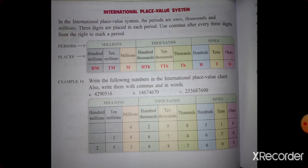In the Ones period, we can write 3 places: that is Ones, Tens, and Hundreds. Next, in the Thousands period, we can write 3 places: that is Thousands, Ten-Thousands, and Hundred-Thousands. And in the Millions period, we can write again 3 places: that is Millions, Ten-Millions, and Hundred-Millions.